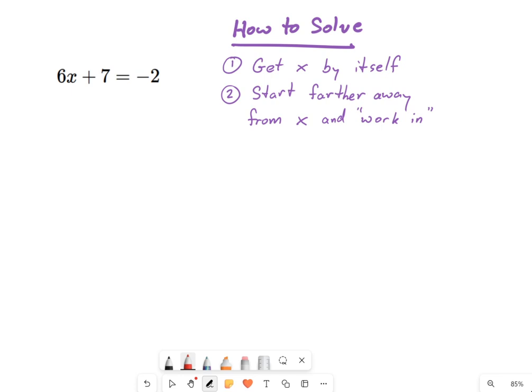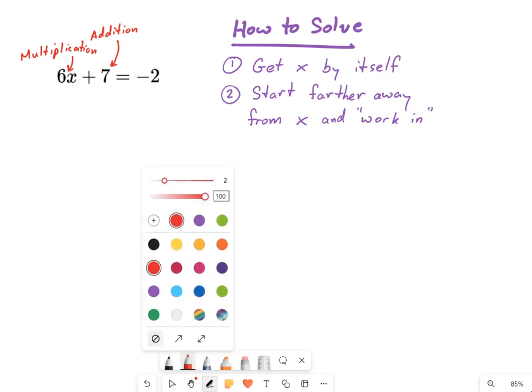So here's how I approach this. I'm going to identify what's going on here. And when I say what's going on, I mean what operations are happening. That's an addition problem right there, the plus 7. And this over here, the 6x, that means multiplication.